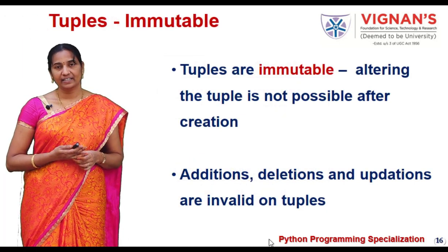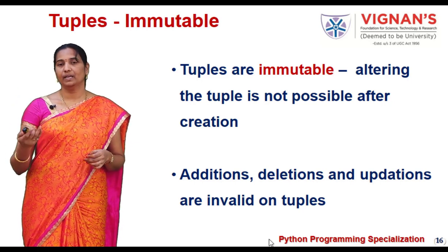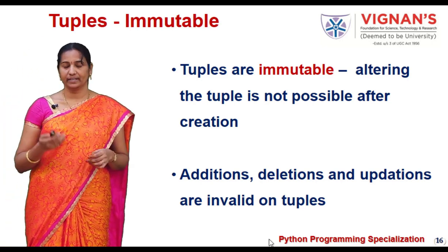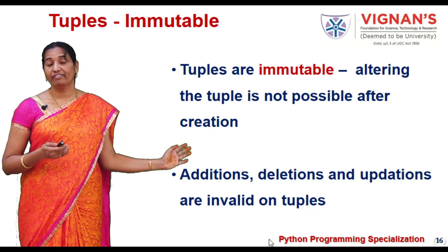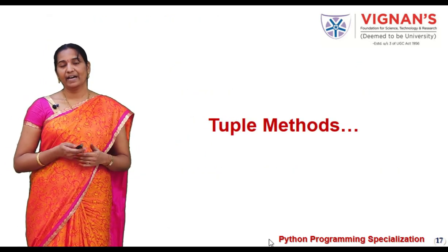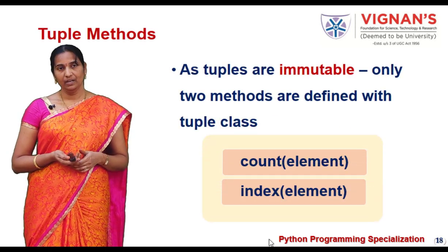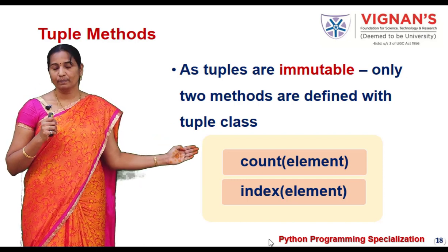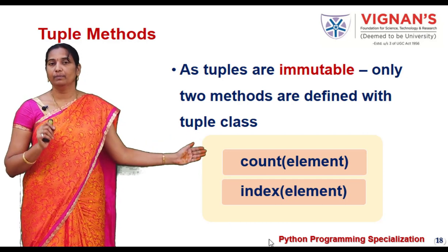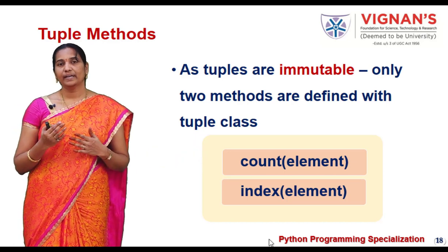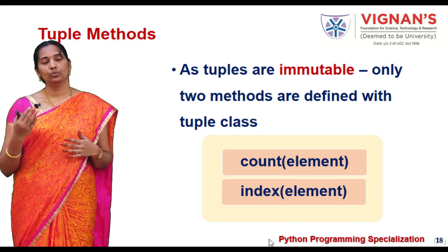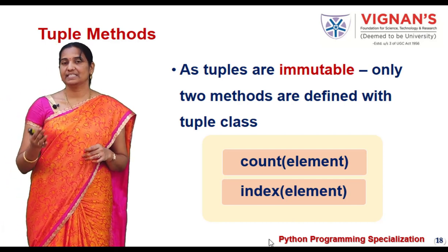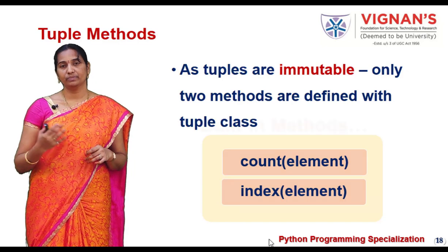Since tuples are immutable, once you create a tuple it is not possible to alter its elements. Additions, deletions, and updates are not valid on a tuple. Because of this, only a few methods can be used with tuples. We can use the count method to understand how many times a given element is repeated, and we can use the index method to understand at what position a given element is available in the tuple. So the tuple class provides only two methods: count and index.